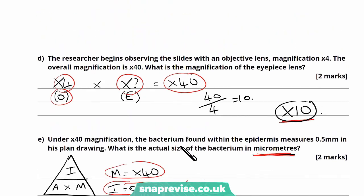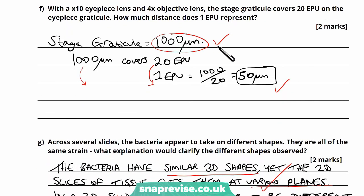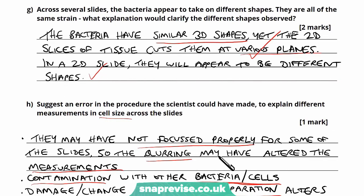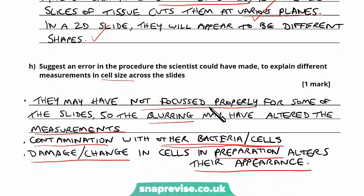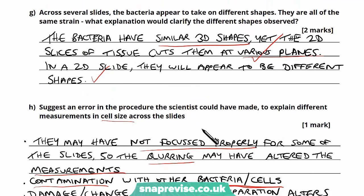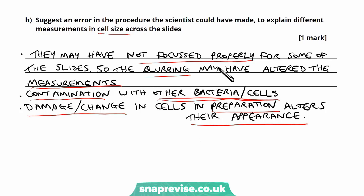We've covered analysis questions centring around magnification and graticules — there are certain equations to learn, but once you're familiar with those and comfortable with units and standard form, there's a limit to how much they can ask. The evaluation questions are more suggestive. Think of it as a story: going from slide preparation to measuring distance, what errors could have been made by the instrument or the human? Always read the question carefully. Question G was about different shapes even though they're the same strain — that's a limitation of light microscopes, not a human error. Part H was specifically about human error affecting measurements.